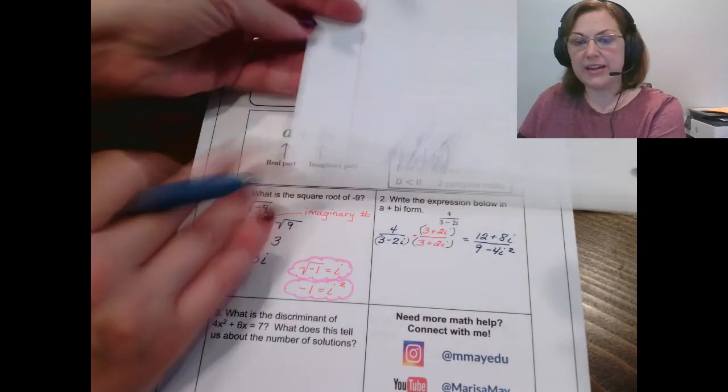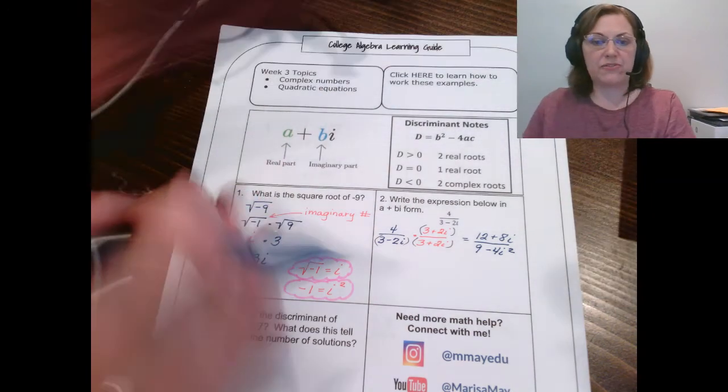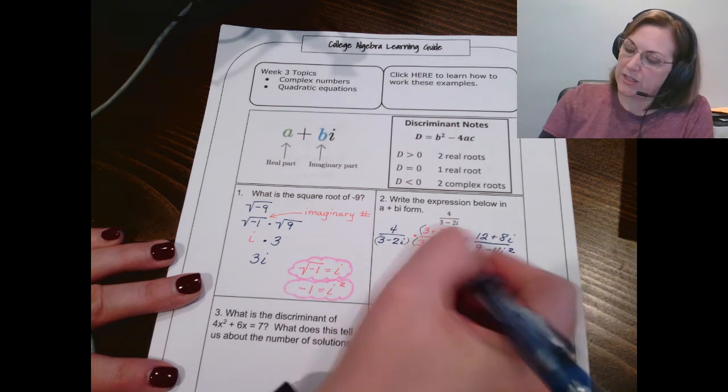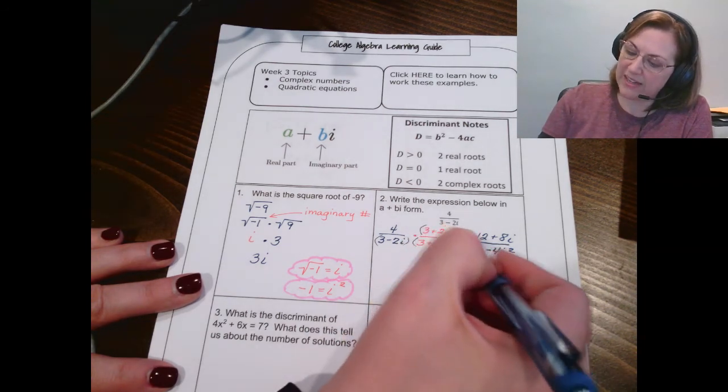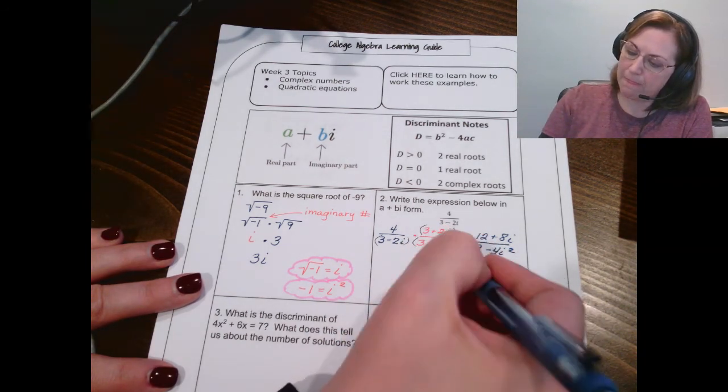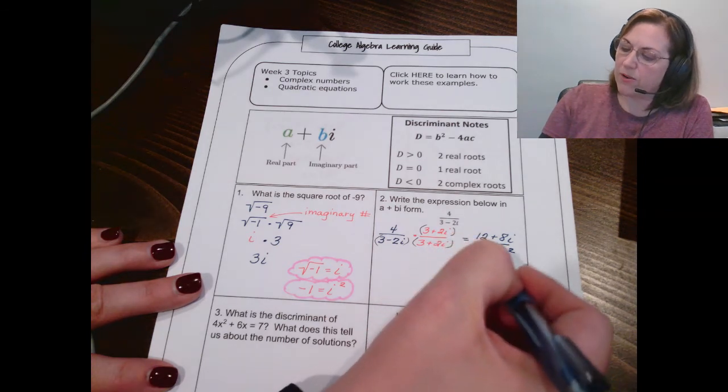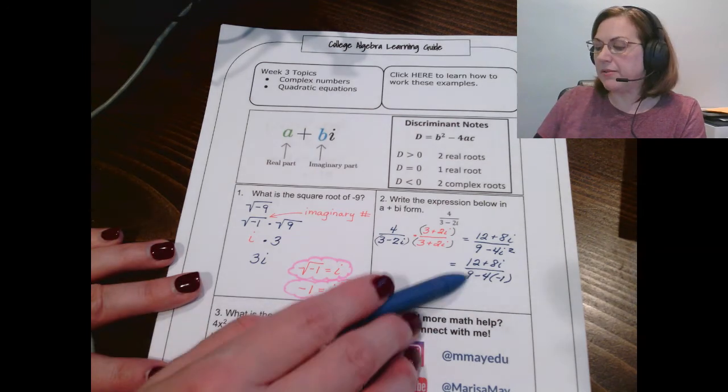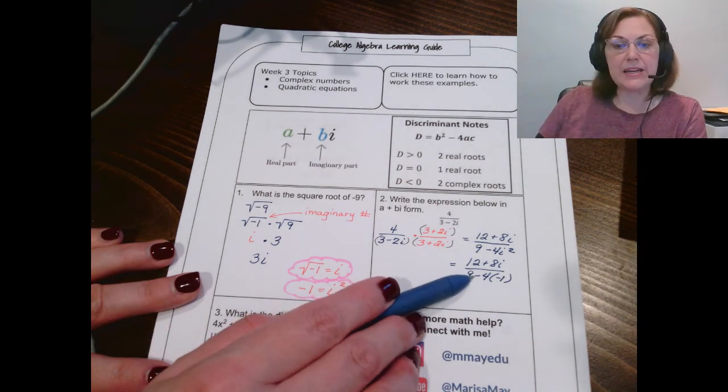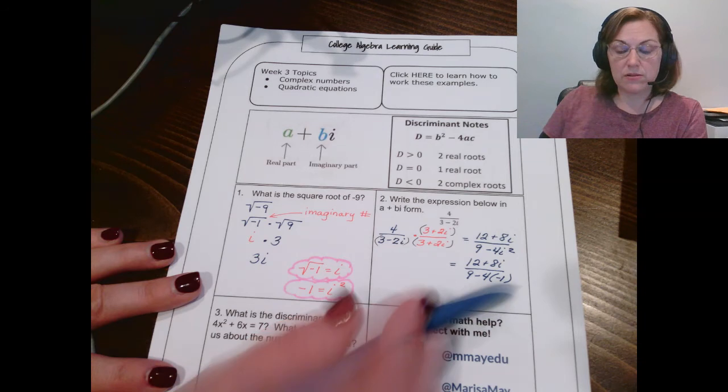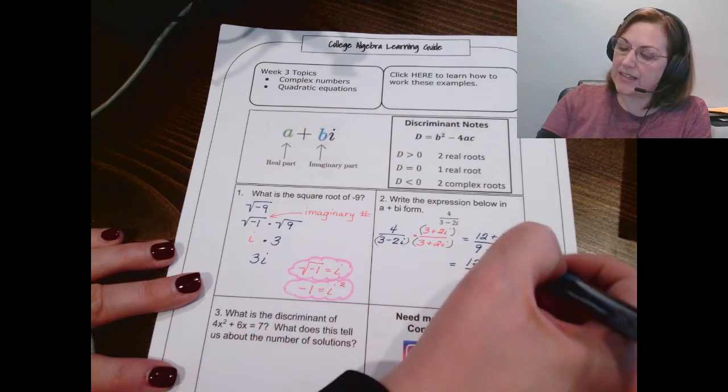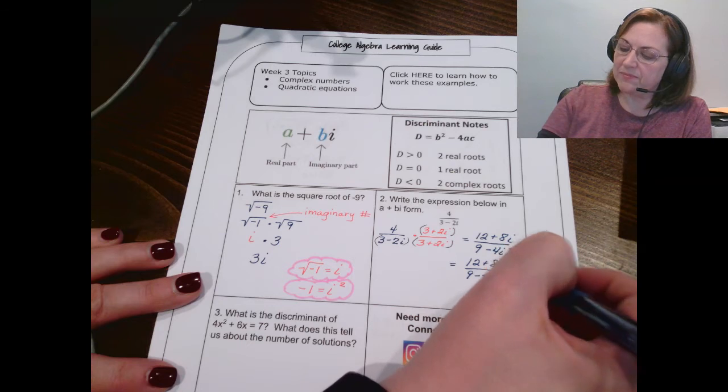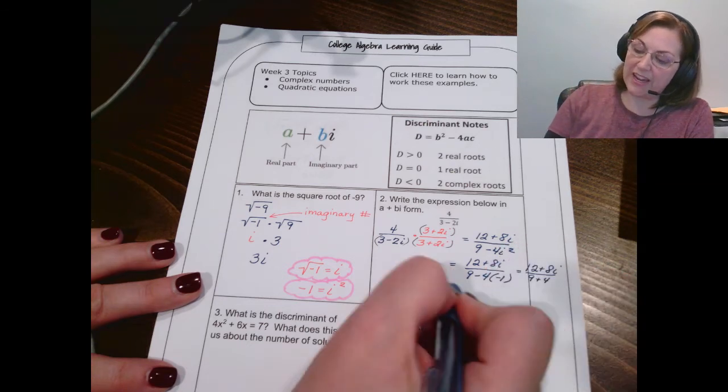All right. So, good job on the multiplying. Now, we need to simplify a little bit further. Remember, i squared is negative 1. So, I'm going to go ahead and make that substitution. I've got 4 times negative 1 now. Look at your denominator. I've got 9 minus negative 4, which is the same thing as 9 plus 4, which is the same thing as 13.